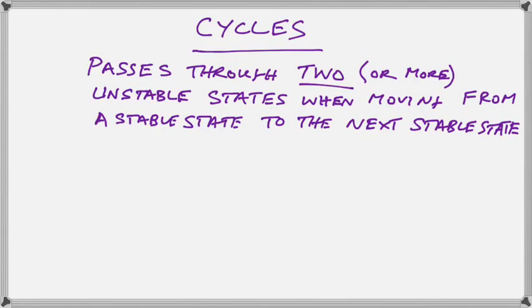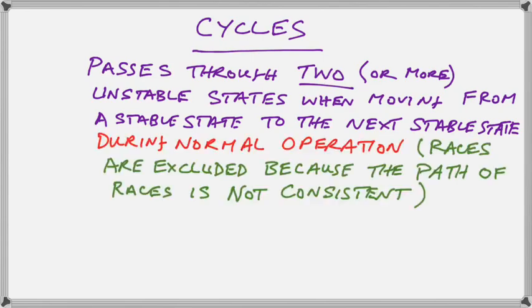How about cycles? A cycle is defined as when moving from one stable state to another, we pass through two or more unstable states. But that only applies during normal operation. Races are to be excluded because the path of a race is never consistent. Therefore, it does not constitute a cycle. Even though it looks like cycles occur in races, cycles, by definition, are for normal operation of the device.